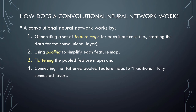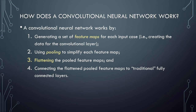Next, let's consider a high-level overview of how convolutional neural networks work. Broadly, a CNN works by first generating a set of feature maps for each input case — this creates the data for the convolutional layer. Next, we use a technique called pooling to simplify each feature map. Third, we flatten the pooled feature maps. And finally, we connect the flattened pooled feature maps to traditional fully connected layers, allowing information to forward propagate through the rest of the network, ultimately yielding our predictions.